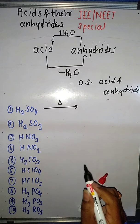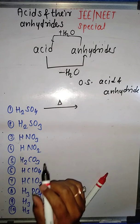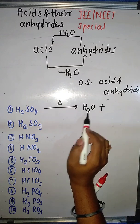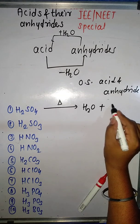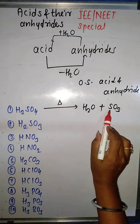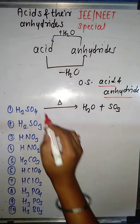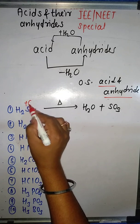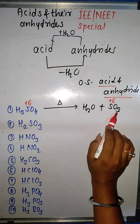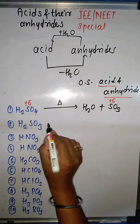Anhydrides are obtained by loss of water. When H₂SO₄ undergoes dehydration with a very strong dehydrating agent, H₂O is removed from the molecule and what remains is SO₃. The oxidation state of sulfur in H₂SO₄ is +6, and in SO₃ it is also +6. So SO₃ (sulfur trioxide) is the anhydride of H₂SO₄ (sulfuric acid).